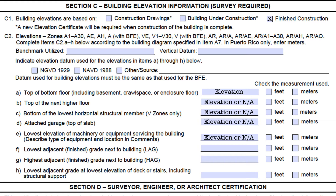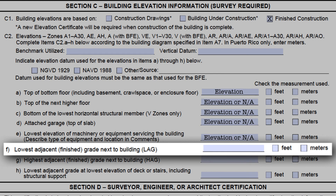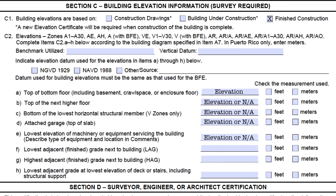Failure to have any comments in section D is not an error, but it sure helps to have those comments whenever a reviewer has questions. Next, we get into the adjacent grades next to the building. This will help determine how high the lowest floor or next highest floor is above grade, for both insurance and compliance purposes. Both C2F, the lowest adjacent grade, and C2G, the highest adjacent grade, must be entered for every building — there is always a lowest and highest adjacent grade next to the foundation, so these two are always required. C2H we do not check for CRS purposes, as we are mostly concerned with building floors, equipment, and adjacent grades.